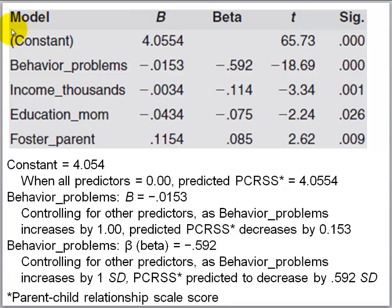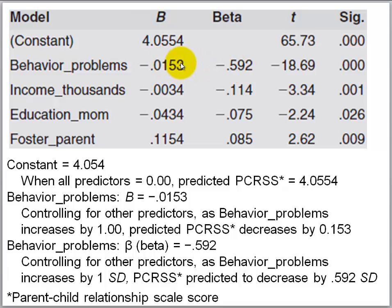Here are the results of the multiple regression analysis. Note that we are presenting both b's and betas. The SPSS statistical program presents a single significance test for both the standardized coefficient beta and the unstandardized coefficient b. So if one is statistically significant — if it differs statistically from zero — then so also is the other by definition. For the behavior problems predictor, both the beta and the b are significant at precisely the same significance level.